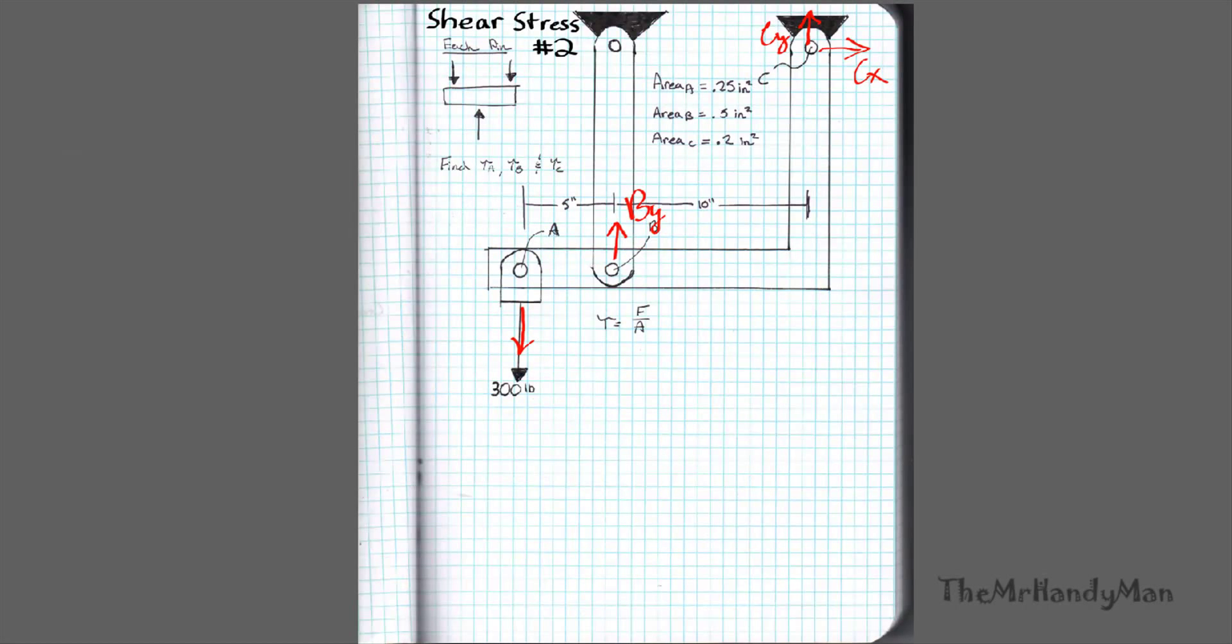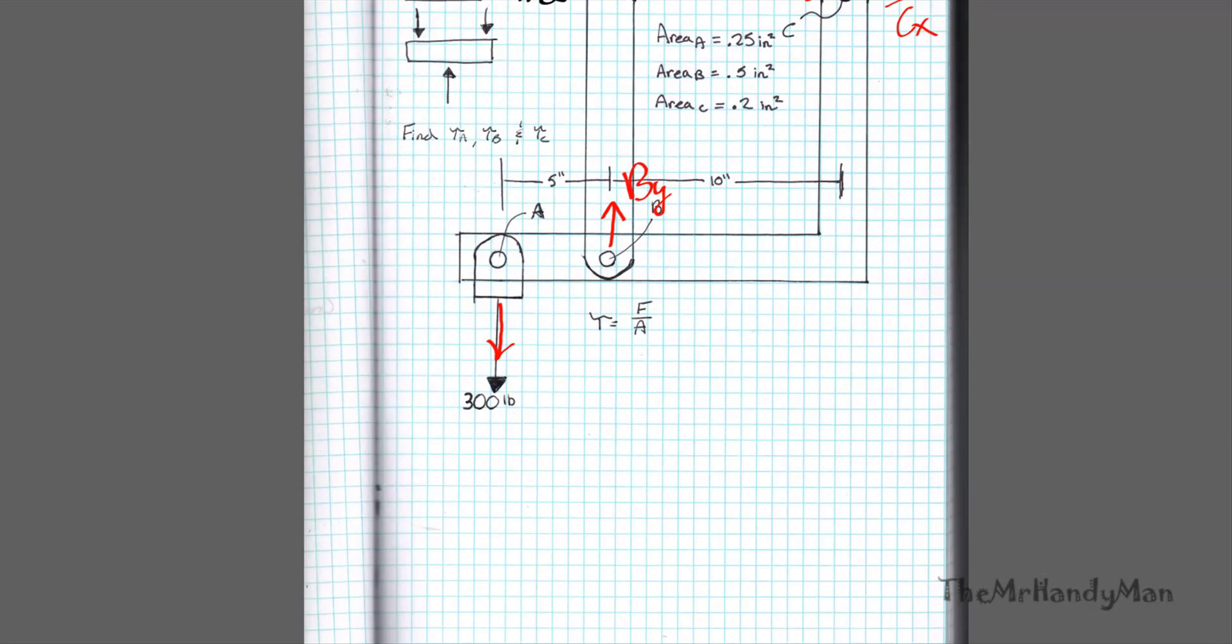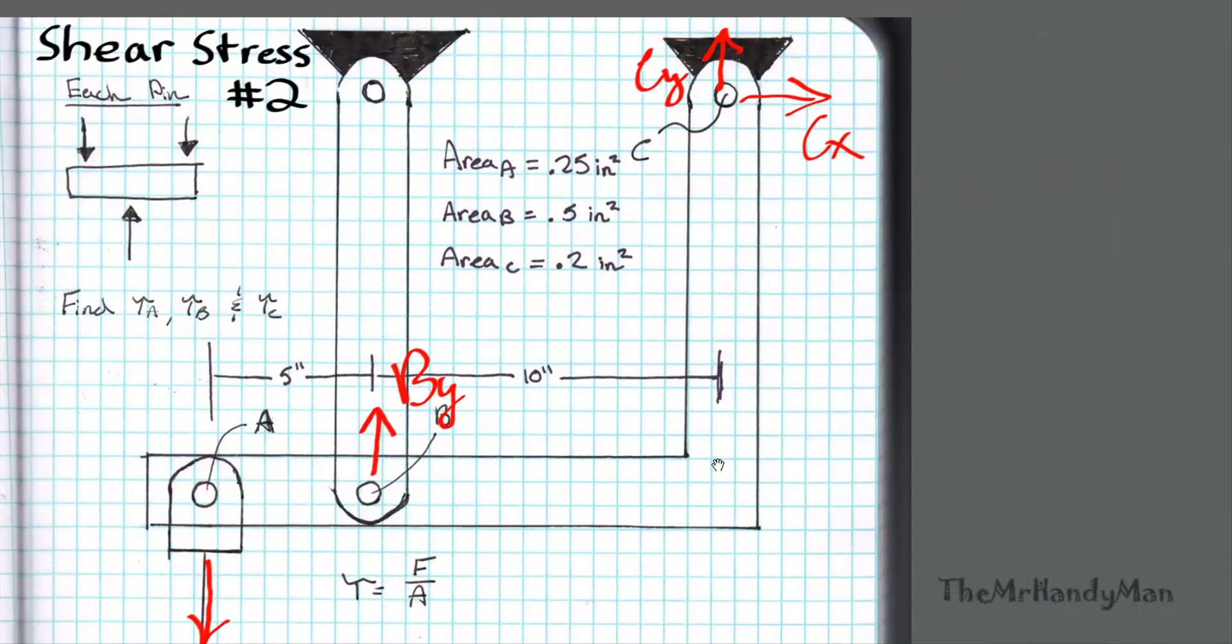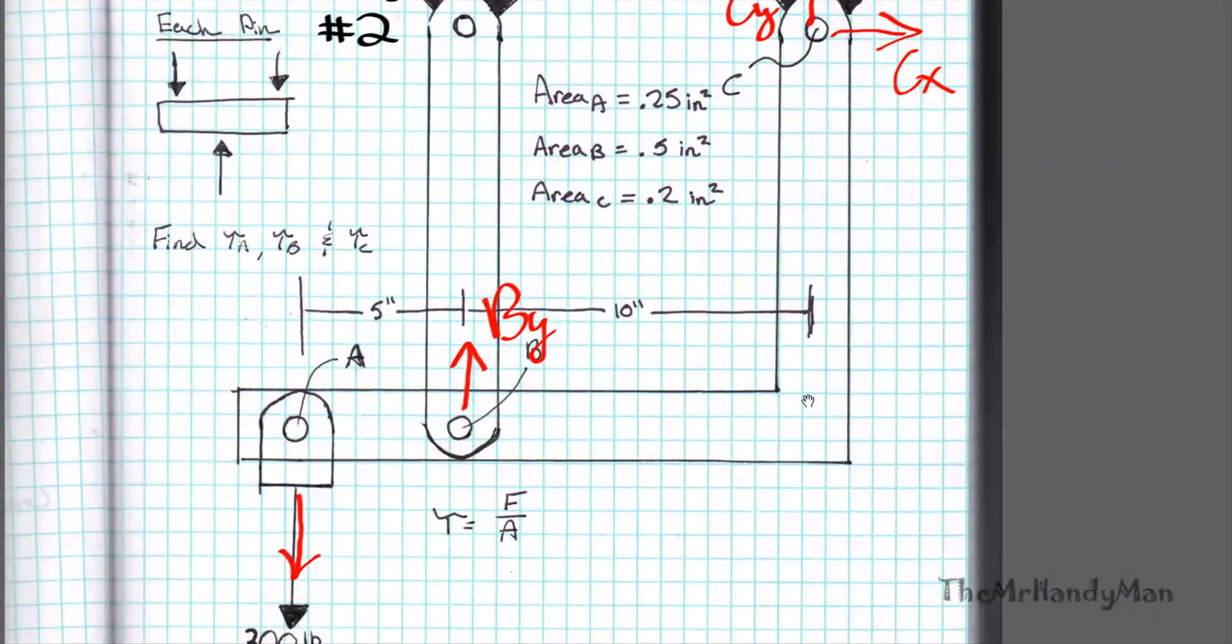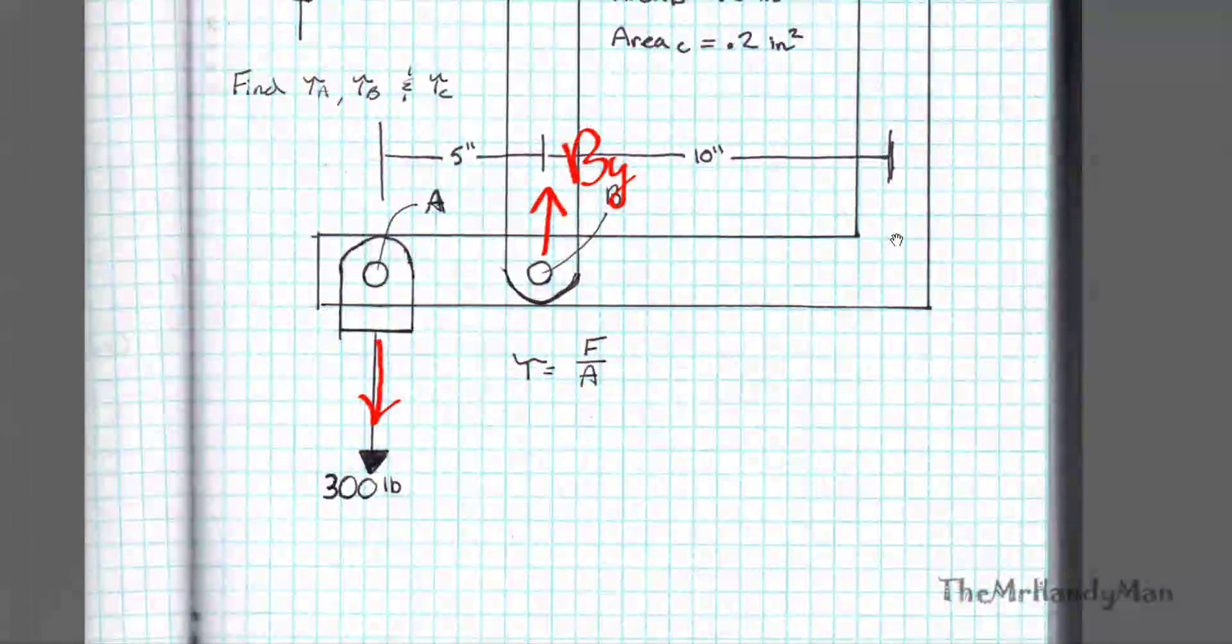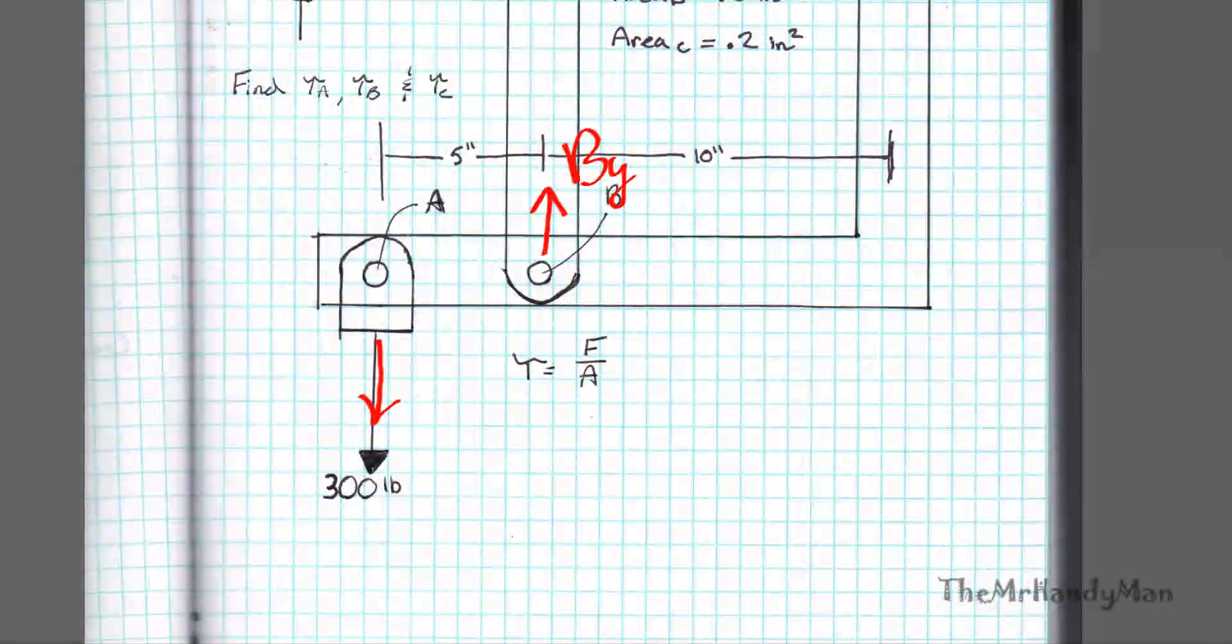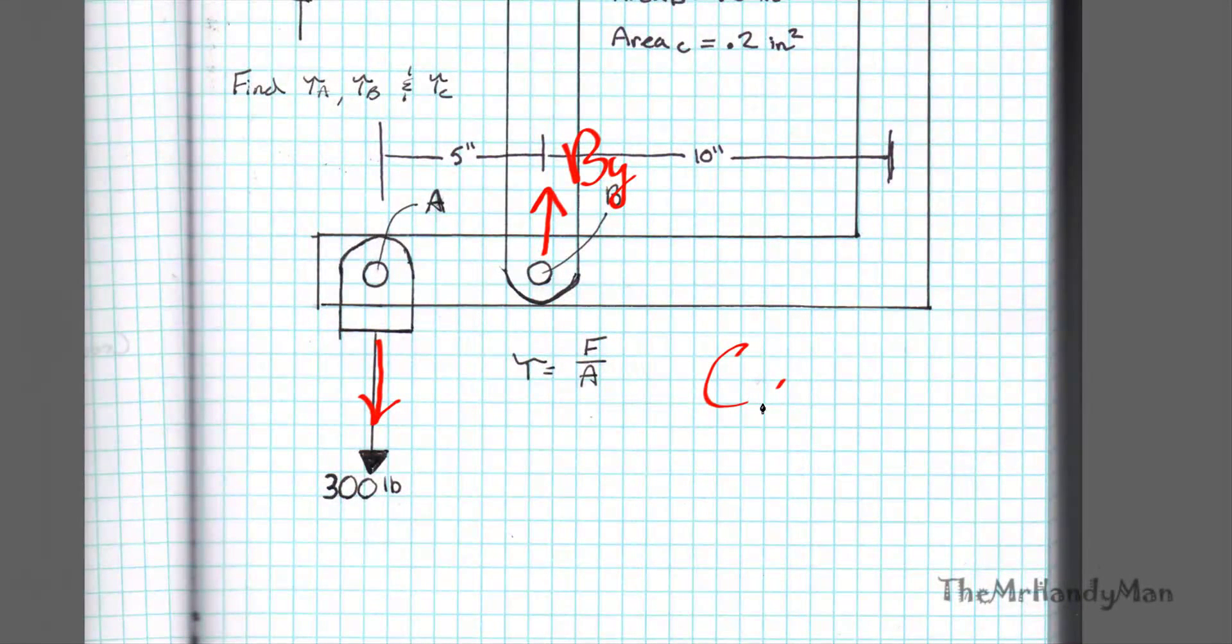Let me step back for a second so you can see the whole picture. This Cx has nothing to counter it. So we can automatically assume that since the summation of forces needs to equal zero because we're not moving, Cx is just going to equal zero. We can call that a day.